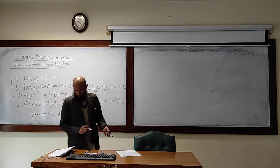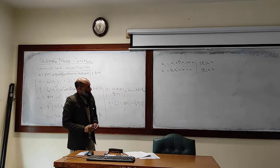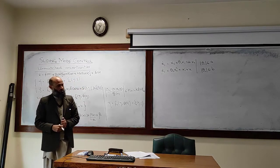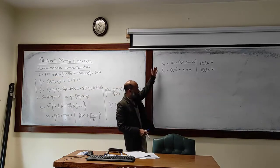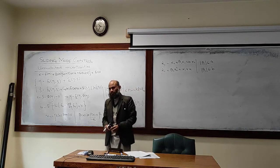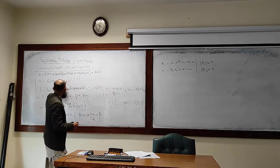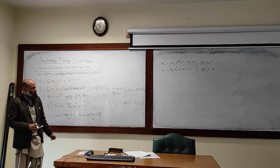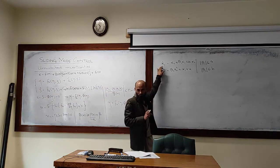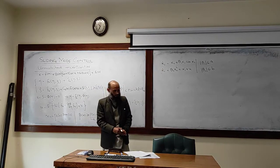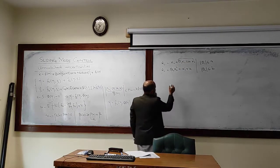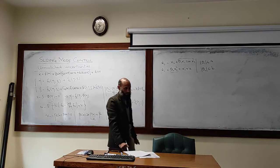Let's demonstrate this with an example. Theta1 is uncertain and theta3 is also uncertain; we know the bounds on these uncertain parameters. To design sliding mode control for this nonlinear system, we need to bring it into normal form — regular form — by application of state transformation. We can see this system is already in regular form, with theta1 as the unmatched uncertainty and theta3 as the matched uncertainty.